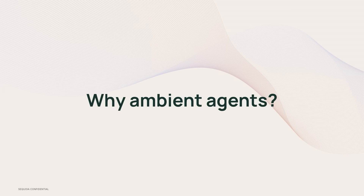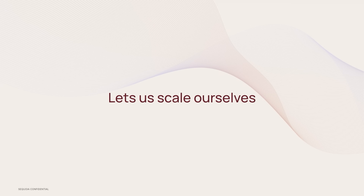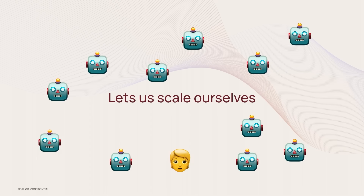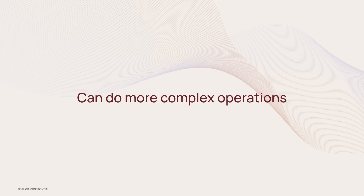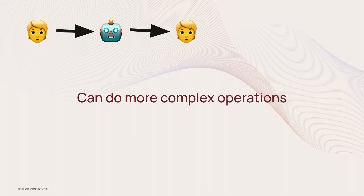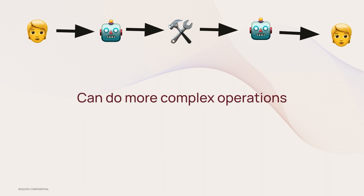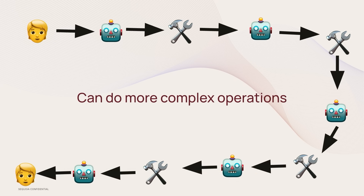Why ambient agents? First, they let us scale ourselves. With a chat agent it's generally one-to-one. With ambient agents, thousands can run in the background, scaling our impact far more. Second, they can handle more complex operations. With chat agents, the latency requirements keep things simpler — maybe one or two tool calls. With ambient agents, you can call a ton of tools, add explicit planning or reflection steps, and build up the complexity of what you're building.